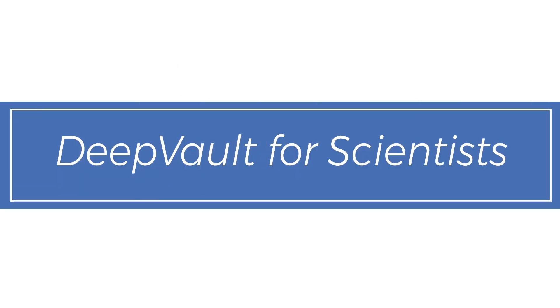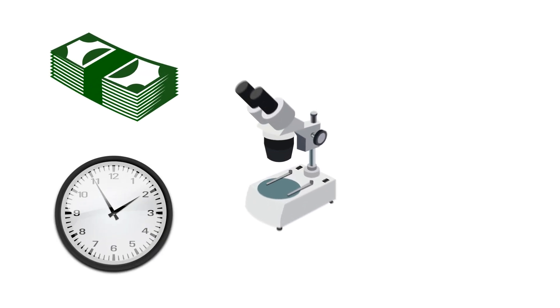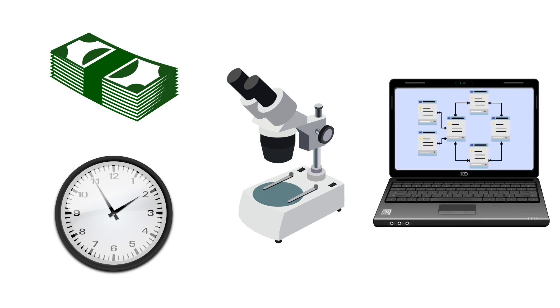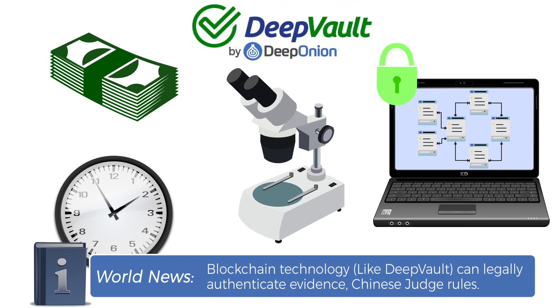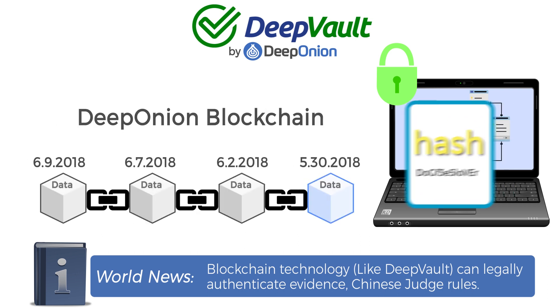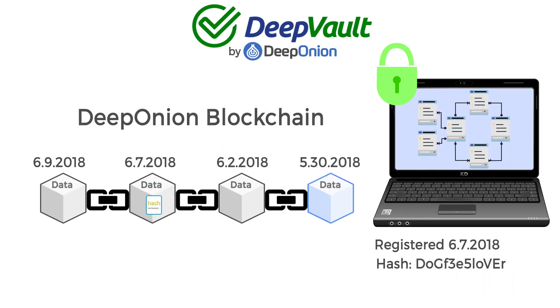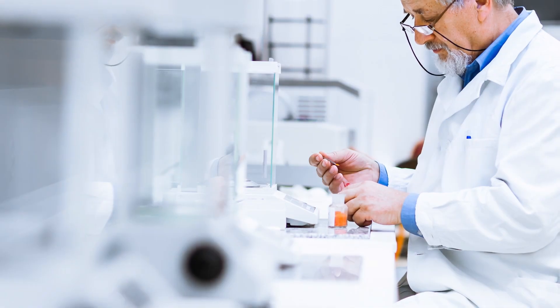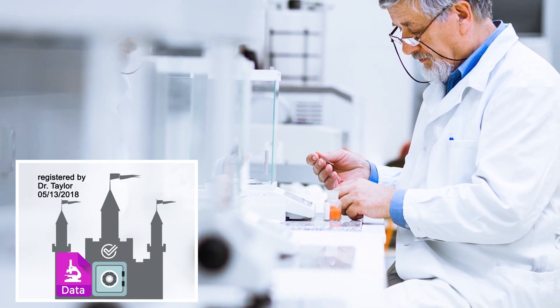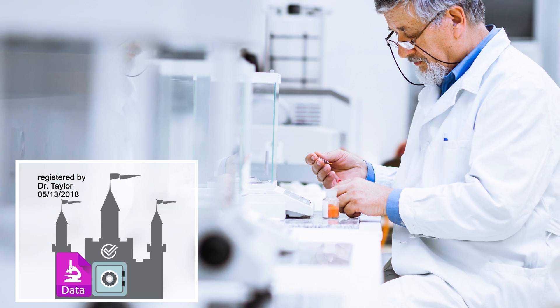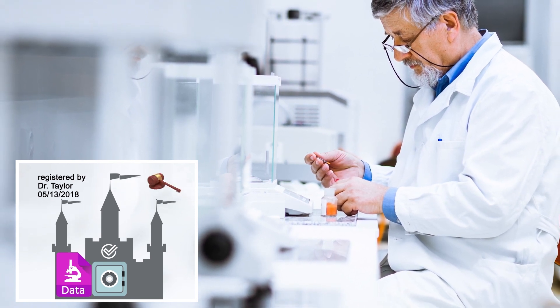DeepVault for scientists. Vast sums of money, grants, and time are placed upon scientific projects. This data is incredibly important to future technological advancements and deserves to be protected. DeepVault protects your data from tampering by storing an immutable hash of your research data. DeepVault acts like a fast patent system with low fees. For example, if you have a breakthrough discovery or invention, you can register it on DeepVault and it is stored on the DeepOnion blockchain. You can now claim that you were the first person to discover or invent it, which can easily be verified by legal authorities.